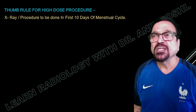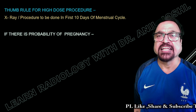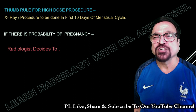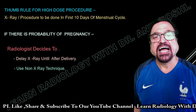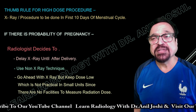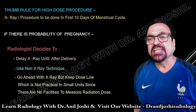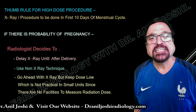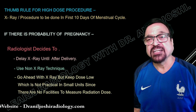The thumbnail rules for dose and procedures: X-ray procedures should be done in the first 10 days of the menstrual cycle. If there is a possibility of pregnancy, the radiologist should decide whether to delay until delivery, use an alternative radiological technique that does not use radiation, or proceed with X-ray while keeping the dose minimal. The last option is not practical in small units, as there are no facilities to measure radiation dose to the fetus.